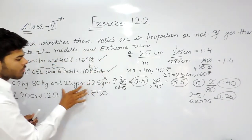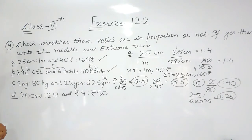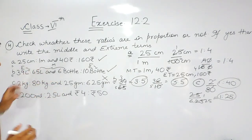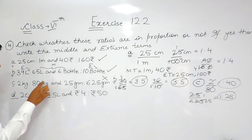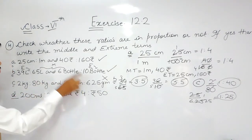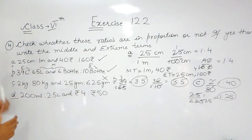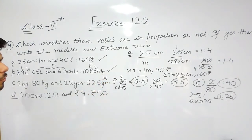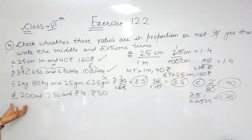Because if two ratios are in proportion, the product of the means is equal to the product of the extremes. Since in this case they are not in proportion, we won't be writing middle and extreme terms.